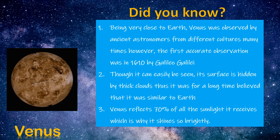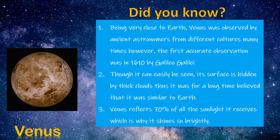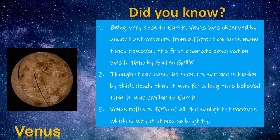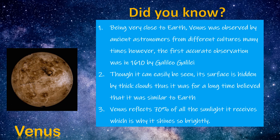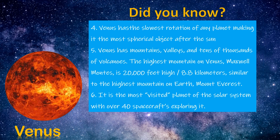Did you know? Being very close to Earth, Venus was observed by Asian astronomers from different cultures many times. However, the first accurate observation was in 1610 by Galileo Galilei. Though it can easily be seen, its surface is hidden by thick clouds, so for a long time it was believed to be similar to Earth. Venus reflects 70% of all the sunlight it receives, which is why it shines so brightly. Venus has the slowest rotation of any planet, making it the most spherical object after the sun. Venus has mountains, valleys, and tens of thousands of volcanoes. The highest mountain, Maxwell Montes, is 8.8 kilometers high — similar to Mount Everest. Venus is the most visited planet in the solar system with over 40 spacecrafts exploring it.